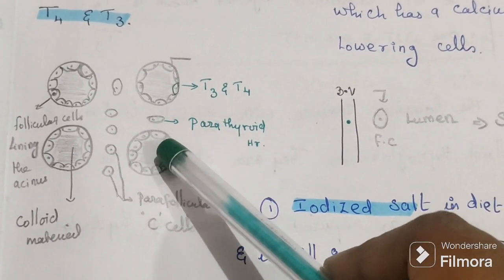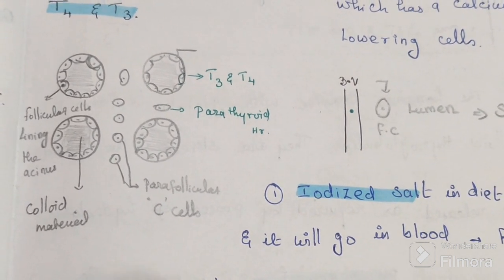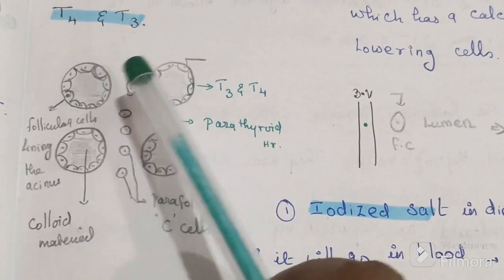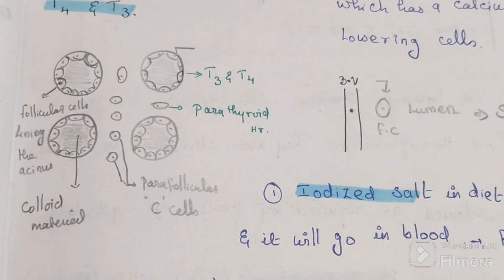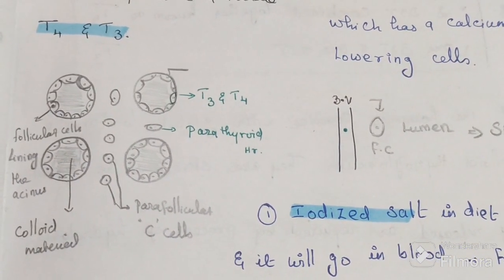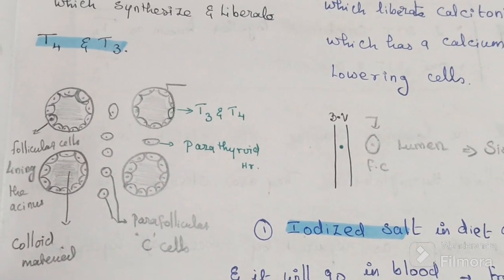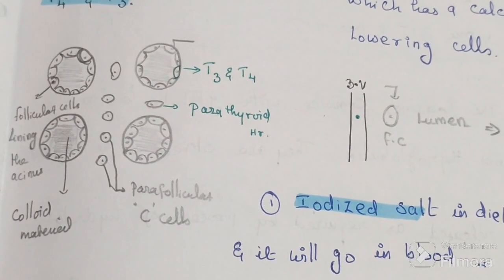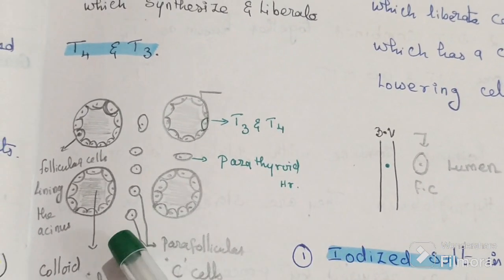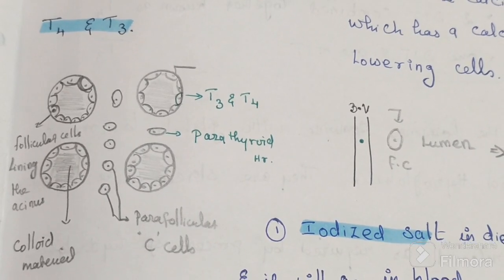The circular structure is the follicle, and the cells lining it are known as follicular cells. Inside the lumen of that follicle is colloidal material. Parafollicular cells are located between follicular cells. Follicular cells secrete T3 and T4 into the blood, and parafollicular cells secrete their hormone into the blood as well.